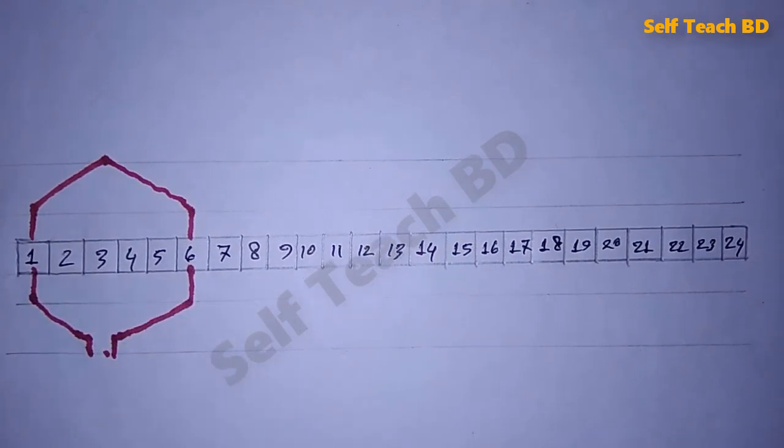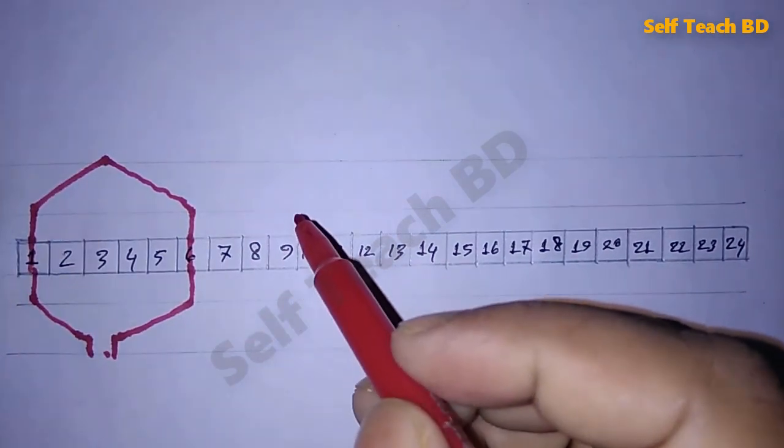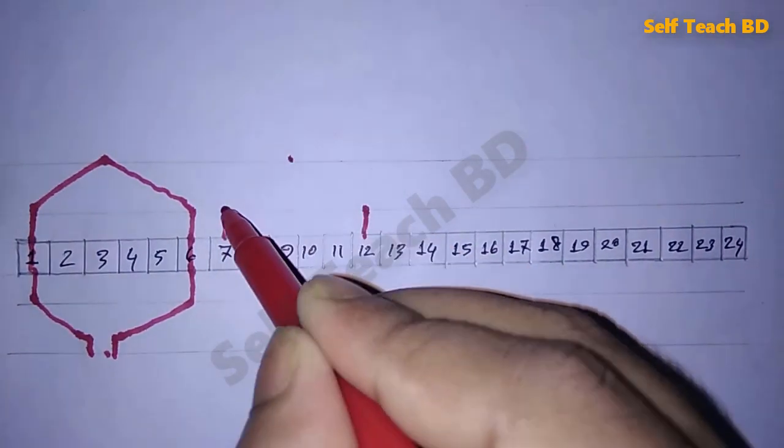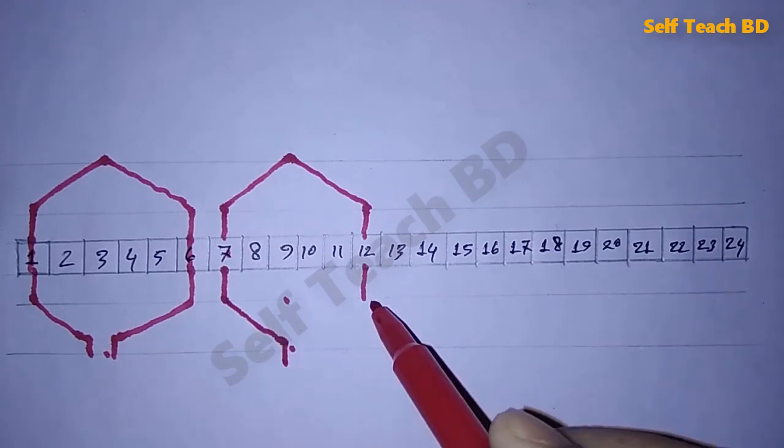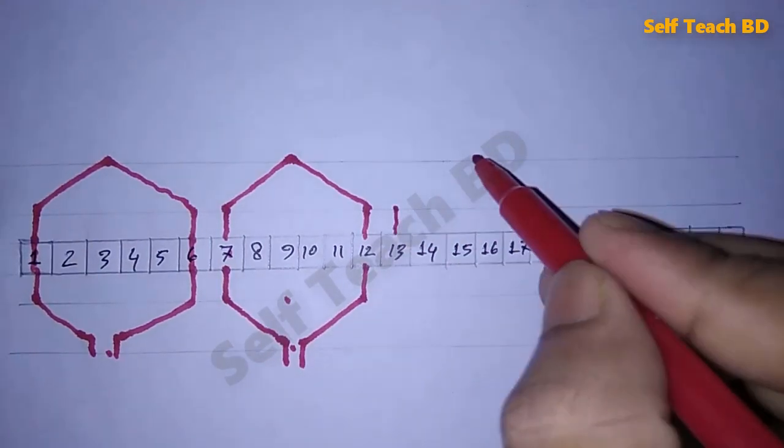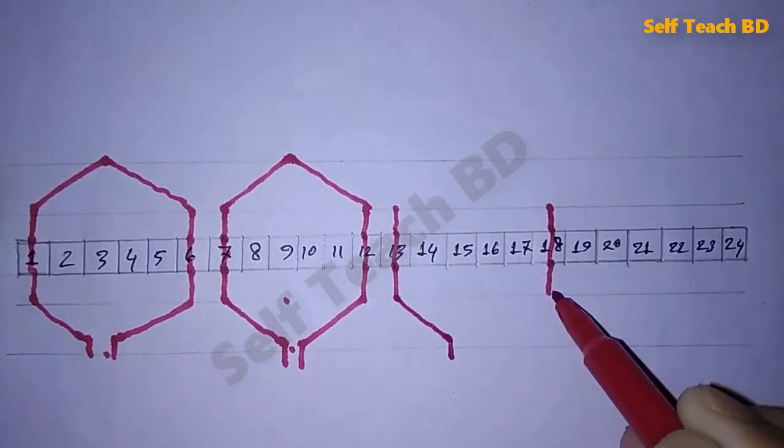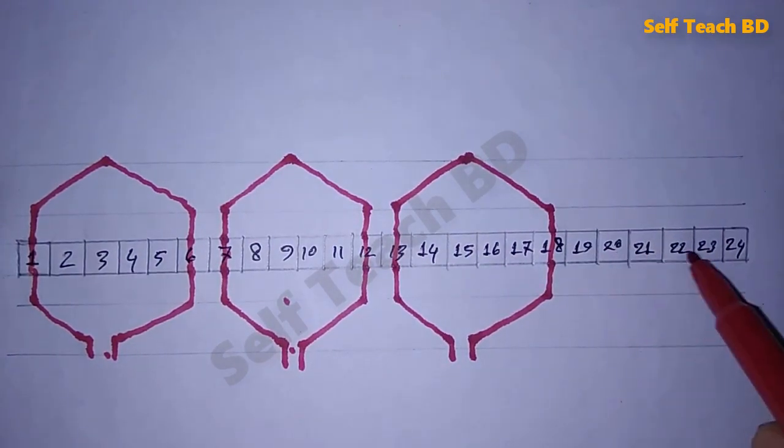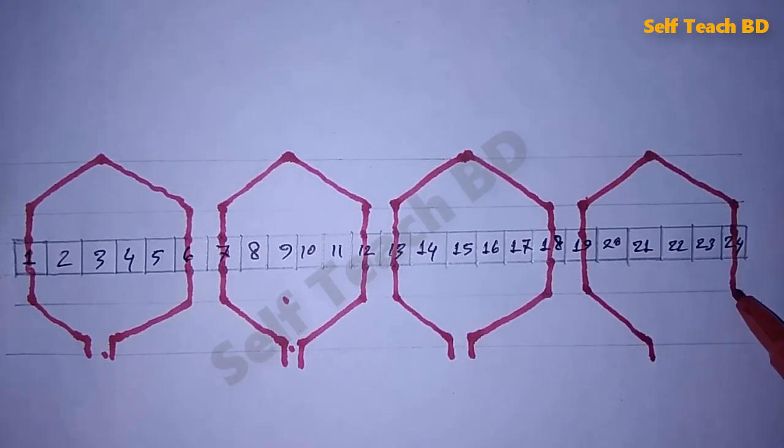First phase first coil will start 1 to 6. First phase second coil will 7 to 12. First phase third coil will start 13 to 18. First phase fourth coil will 19 to 24.